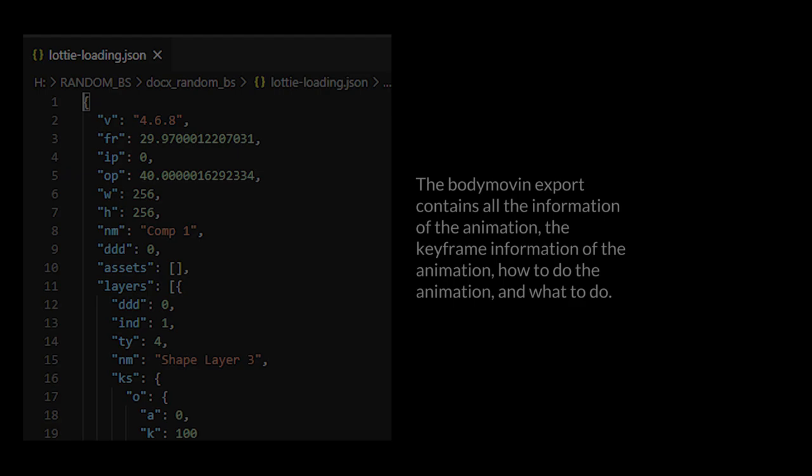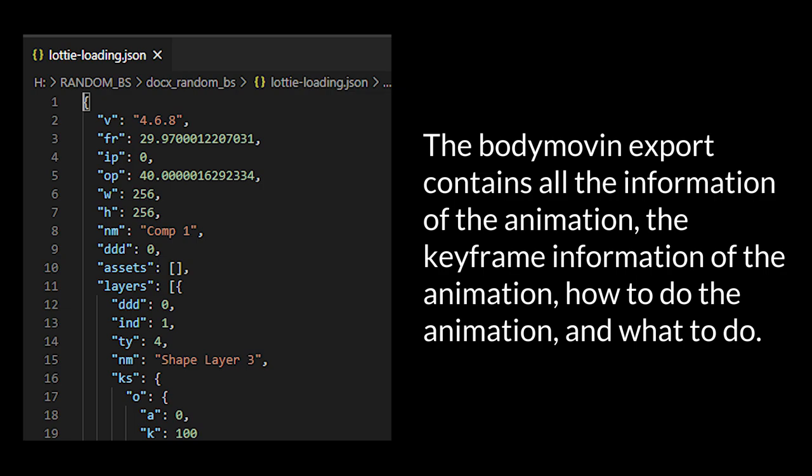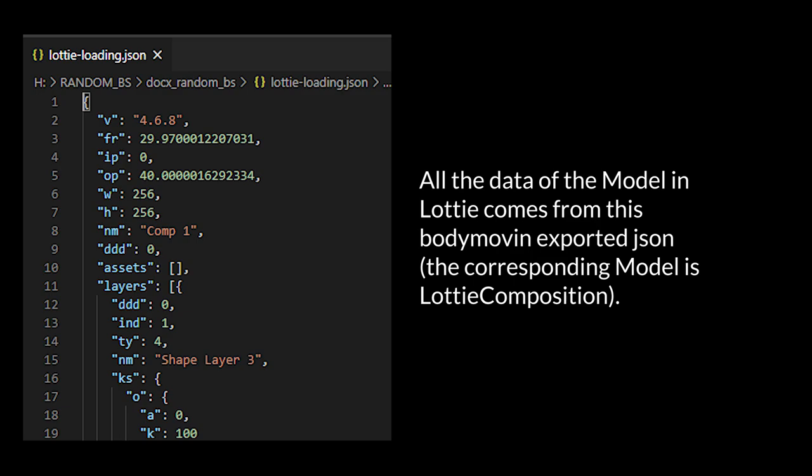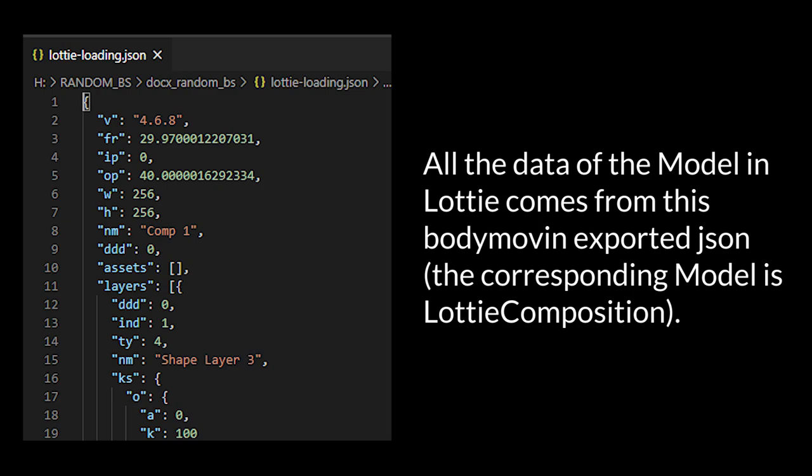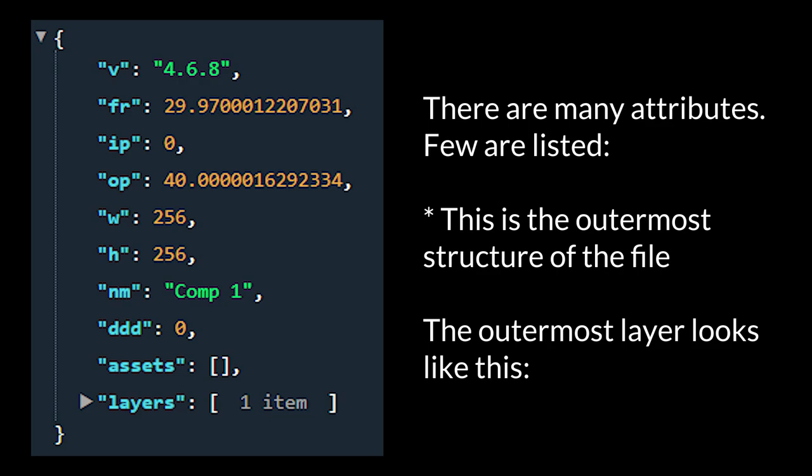The Bodymovin export contains all of the information of the animation: the keyframe information, how to do the animation, and what to do. All the data of the model in Lottie comes from this Bodymovin exported JSON. The corresponding model is LottieComposition. There are many attributes; a few are listed. This is the outermost structure of the file.